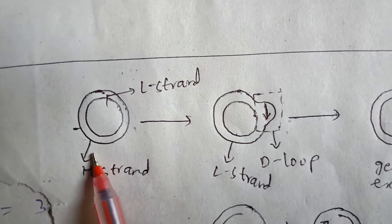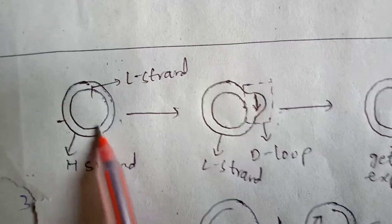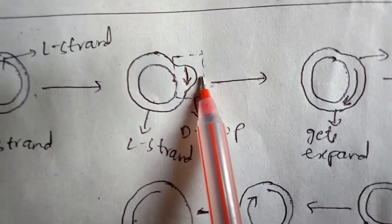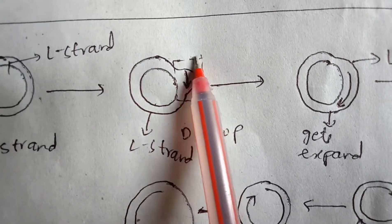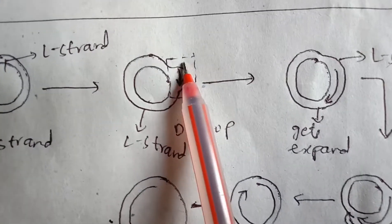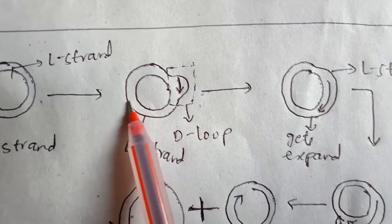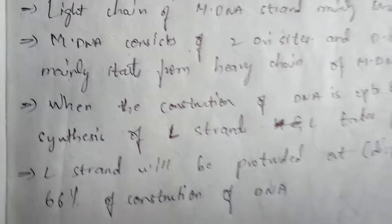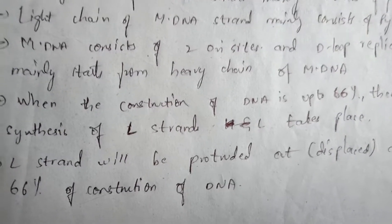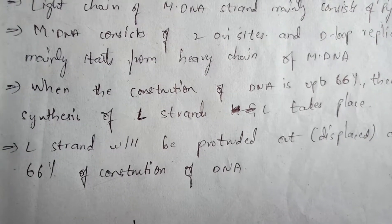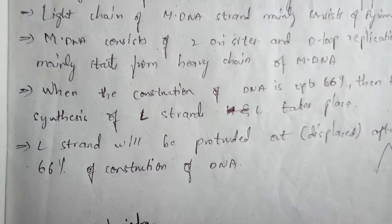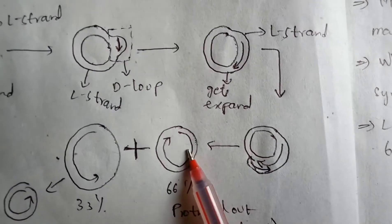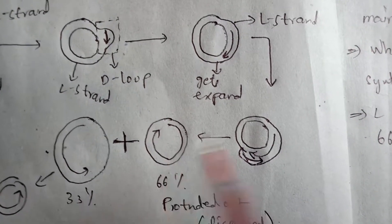In the diagram, the outer strand is the heavy chain. Replication takes place in the heavy chain — the outer part. A D-loop is formed in a D-shape, which is why it is named D-loop replication. The replication gets elongated throughout the outer strand, and when the construction of DNA reaches 66%, the synthesis of the L strand begins and the L strand is displaced outward.